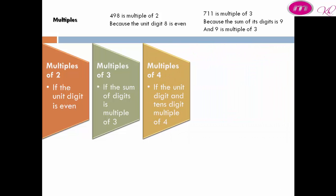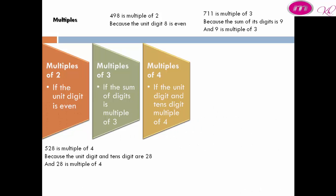Multiple of 4: a number is a multiple of 4 if the unit digit and tens digit together form a number that is a multiple of 4. For example, 528 is a multiple of 4 because the last two digits are 28, and 28 is a multiple of 4.